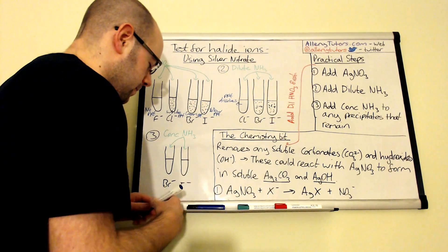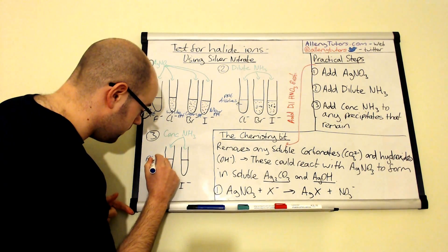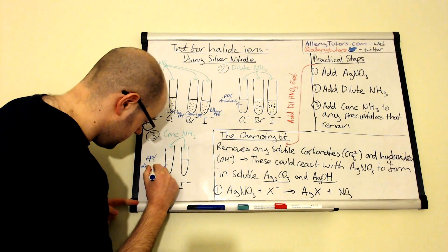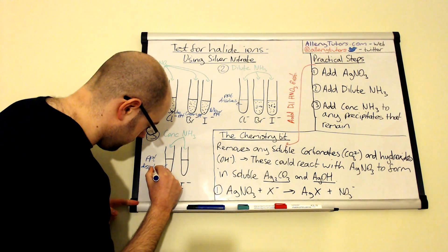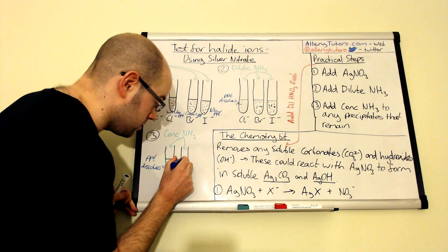Effectively, what happens is with concentrated ammonia, the bromide in this time, this one does dissolve. So that one does dissolve. The precipitate in there does. But your iodide still doesn't dissolve.